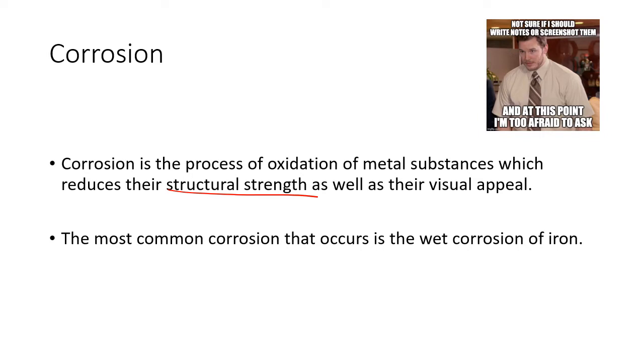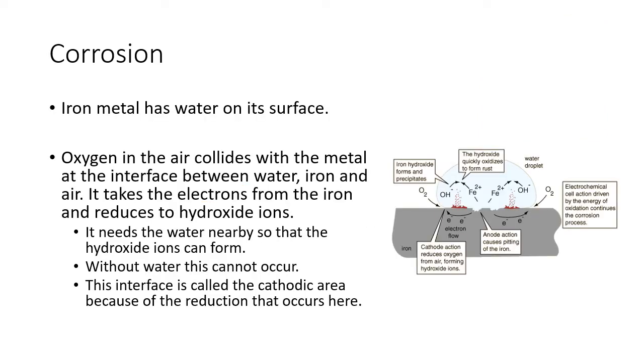So this is what happens. First of all, you have a piece of iron and it has some water on its surface. Then oxygen in the air collides with the metal at the interface between the water, the iron, and the air. So where is that? That's this location there, the interface between the water, the air, and the iron, that little part there.